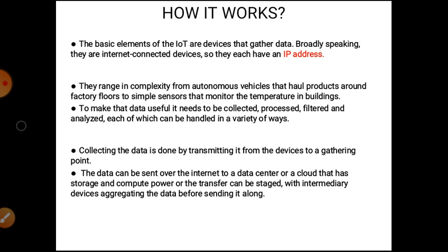Next is how IoT works. The basic elements of IoT are devices that gather data. Broadly speaking, they are internet-connected devices, so they each have their own IP address. The range of complexity goes from autonomous vehicles that haul products around a factory floor, to simple sensors that monitor the temperature in a building. To make the data useful, it needs to be collected, processed, filtered, and analyzed.